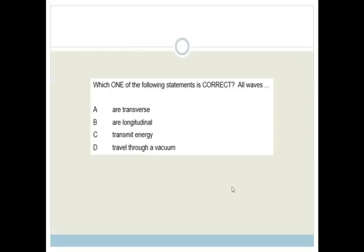So it says, which one of the following statements is correct? All waves are transverse, are longitudinal, transmit energy, and travel through a vacuum. We already know that longitudinal waves are sound waves, and transverse waves can be water waves or light waves, so therefore that's not true. And we also know that sound doesn't travel through a vacuum, so therefore the correct answer has to be that all waves transmit energy.